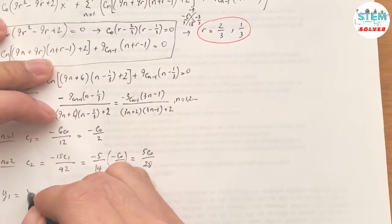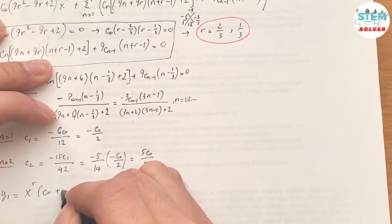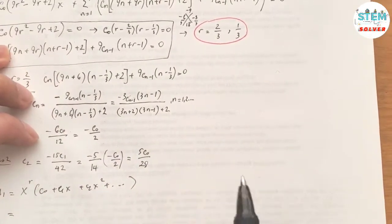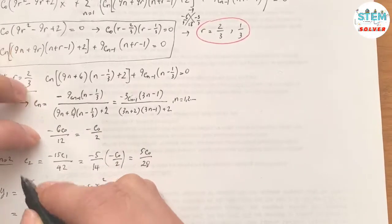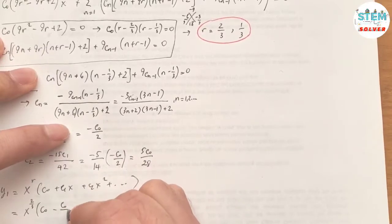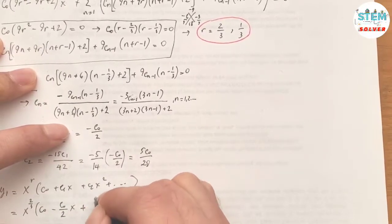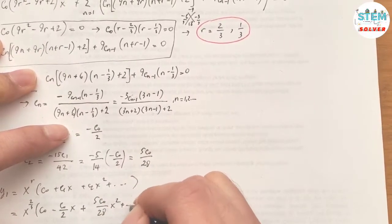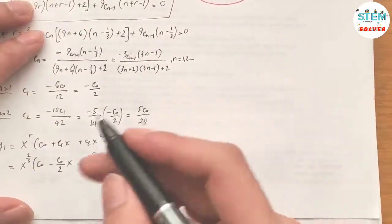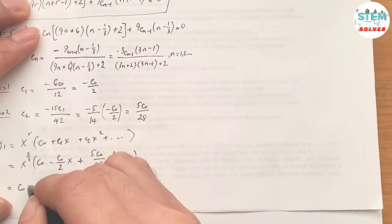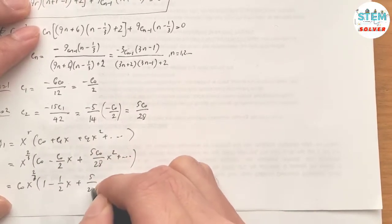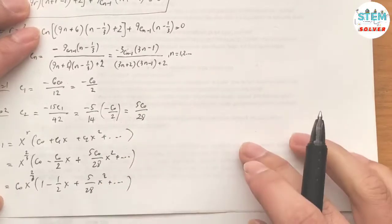So y₁ = x^(2/3) · (c₀ + c₁x + c₂x² + …) = c₀ · x^(2/3) · (1 − (1/2)x + (5/28)x² + …).